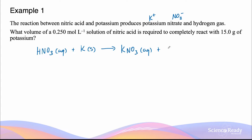Hydrogen gas has the formula H₂. It's a diatomic molecule. The hydrogen atom doesn't exist on its own and prefers the diatomic form due to hydrogen's ability to complete its outermost valence shell, and this is in the gas form.